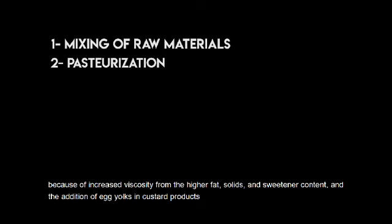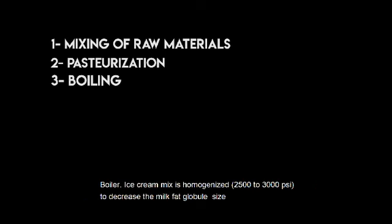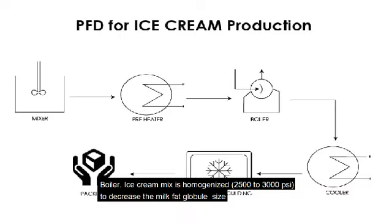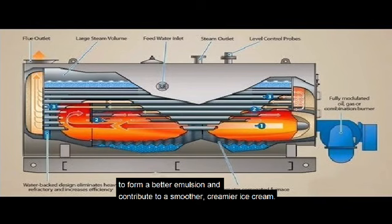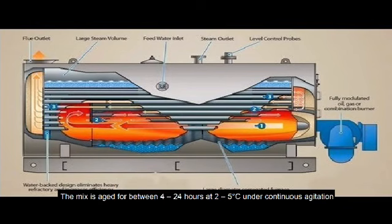The ice cream mixture is homogenized from 2,500 to 3,000 psi to decrease the milk fat globule size, form a better emulsion, and contribute to a smoother, creamier ice cream. The mixture is then aged for 4 to 24 hours at 2 to 5°C under continuous agitation.